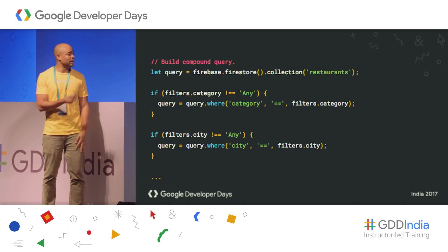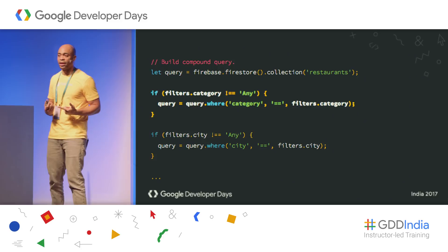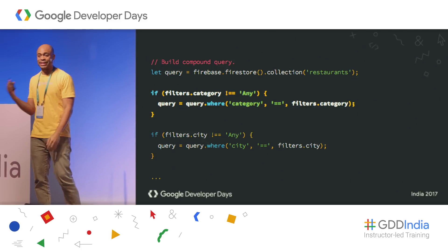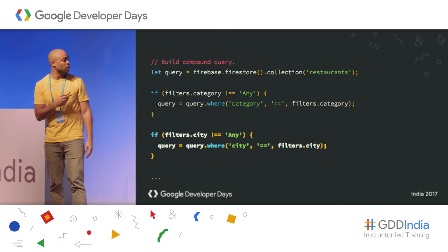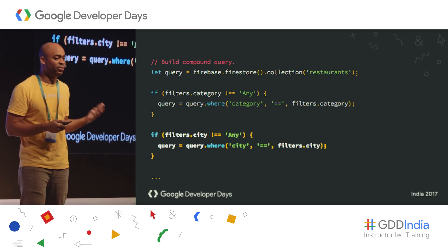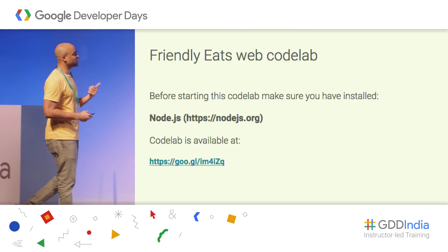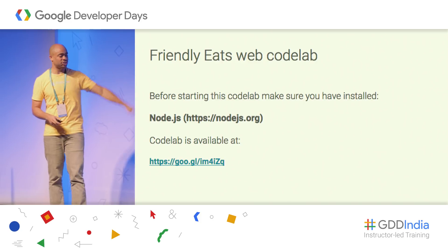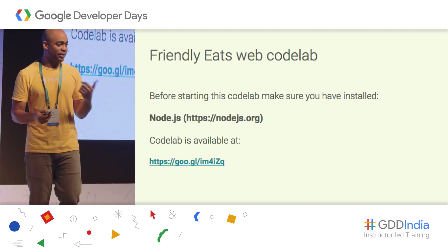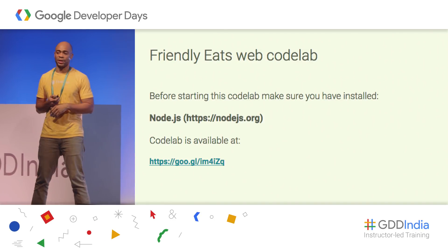For compound queries, we get the restaurants collection at the top as before, then look at our filters from the UI. If the category filter is not 'any' — meaning the user has specified a category filter — we simply add that to our query. We do the same for city, and for all other fields we want to query on. For this codelab, you will need Node.js — that's really the only requirement. The codelab is at the provided short URL, or you can go to github.com/firebase/friendlyeats-web. Thank you very much, and I'll be around.